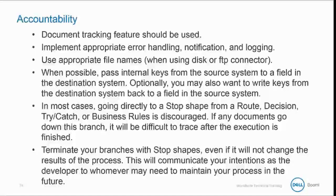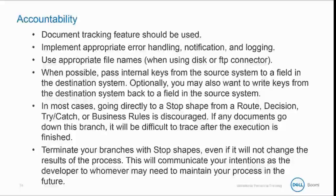In most cases, going directly to a stop shape from a route, decision, try-catch, or business rules is discouraged. If any documents go down this branch, it's going to be difficult to trace after the execution is finished. Terminate all branches in your process with stop shapes, even if it will not change the results. This will help to communicate your intentions as the developer to whoever may need to maintain your process in the future.